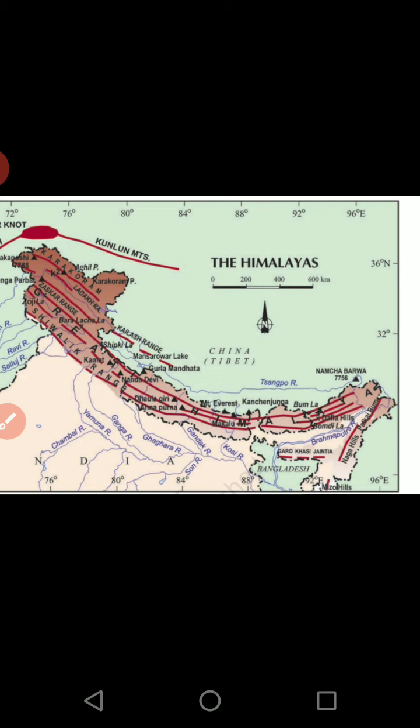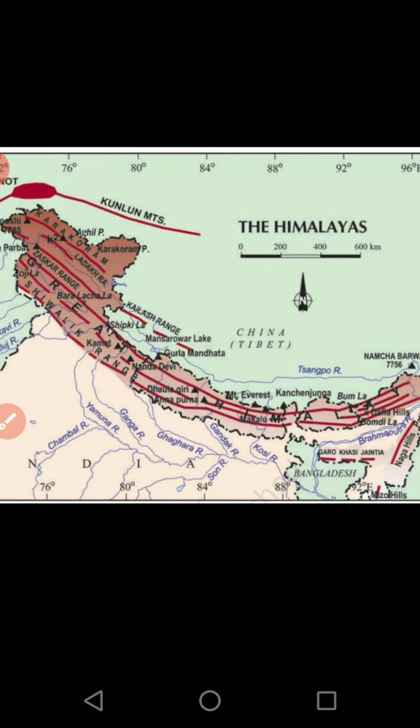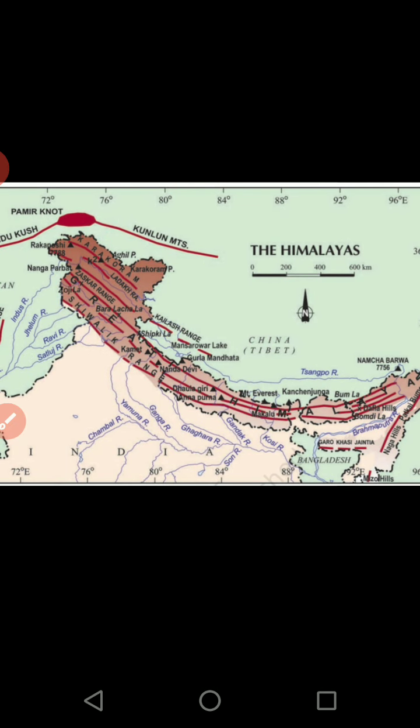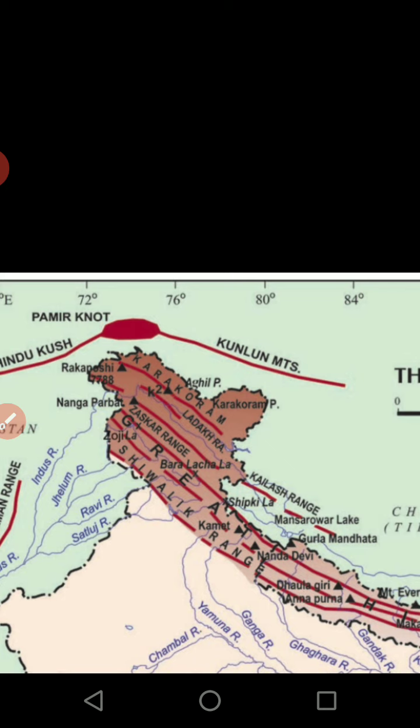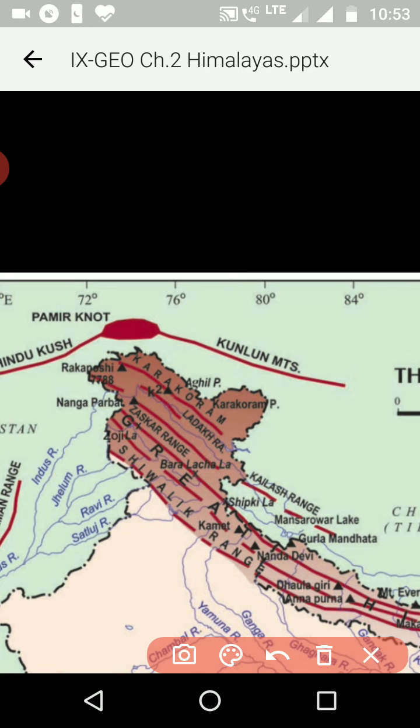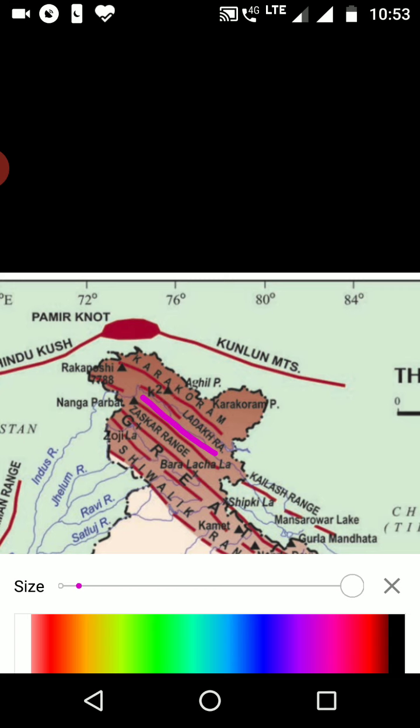The Himalayas are made up of various ranges. The main Himalayas have three ranges which we will study in detail. The remaining part is called the trans-Himalayas, which generally includes the Zanskar range, the Ladakh range, and the Karakoram ranges — these are part of the Himalayas but the major three ranges are different.